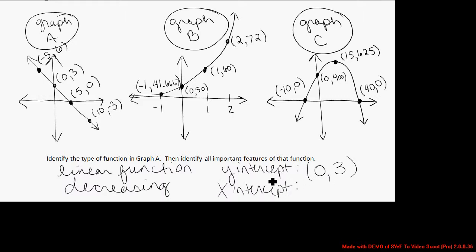The x-intercept is the point on the graph where the height of the graph is zero, where the y is zero. It's the point on the graph where it intercepts the x-axis. That is the point (5,0).